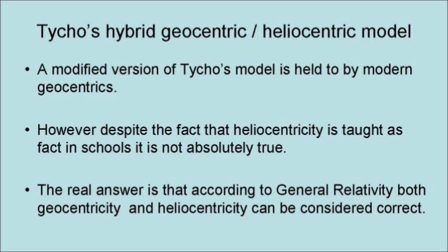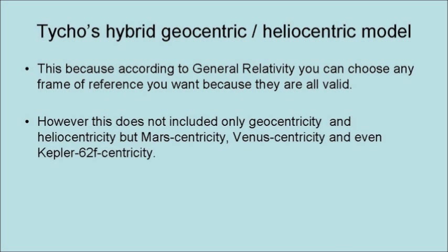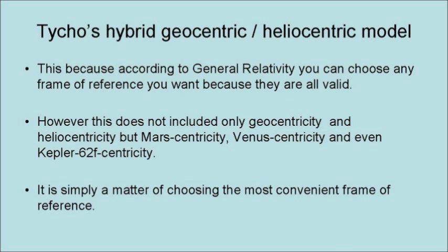This is because the real answer is that according to general relativity, both geocentricity and heliocentricity can be considered correct. This is because according to general relativity, you can choose any frame of reference you want because they are all valid. However, this does not include only geocentricity and heliocentricity, but Mars-centricity, Venus-centricity, and even Kepler-62f-centricity. It is simply a matter of choosing the most convenient frame of reference.